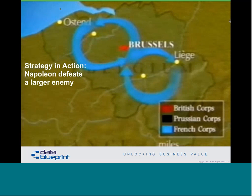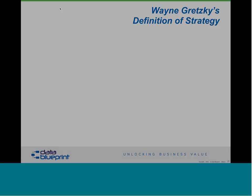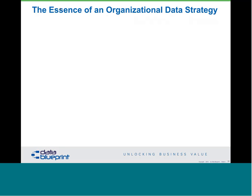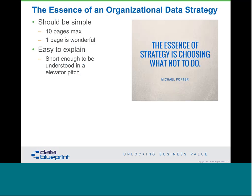That simple strategy won him the day, and having troops that understood that strategy was obviously key. Another example is Wayne Gretzky — he skated to where he thought the puck would be. If you're following the puck around on the ice it goes very quickly, and it becomes very difficult to catch up with it. So the essence of an organizational data strategy is that it should be absolutely simple — I say ten pages max, one page is wonderful. You're looking for an easy explanation; most people do not understand or appreciate data management, so you've got to have something with an elevator pitch.